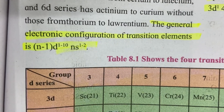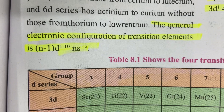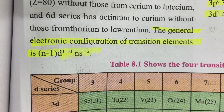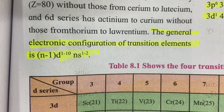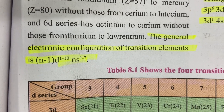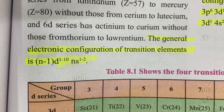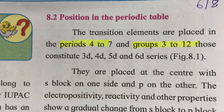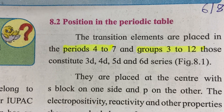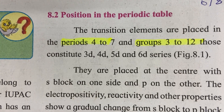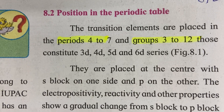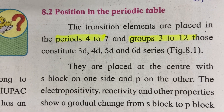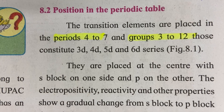The general electronic configuration of transition elements is (n-1)d¹⁻¹⁰ ns¹⁻². Their position in the periodic table: transition elements are placed in periods 4 to 7 and groups 3 to 12.